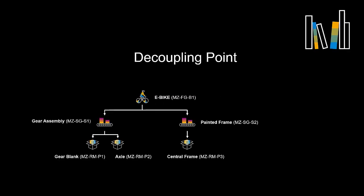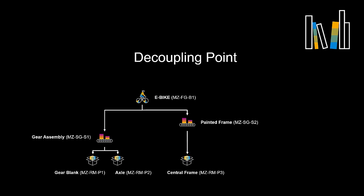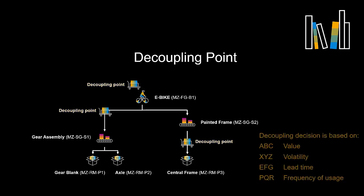A decoupling point is an inventory position where a buffer is placed. The decoupling also means that the MRP will use this point as the starting point when making calculations. The criteria used to determine where a decoupling point should be located are: ABC, which is the value of the material; XYZ, which is the volatility of the material; EFG, which is the lead time of the material; and PQR, which is the frequency of usage and bill of materials for the material.